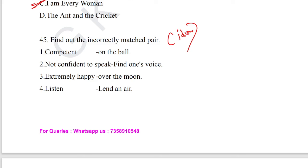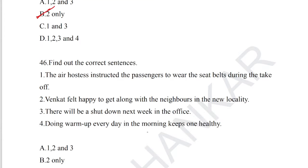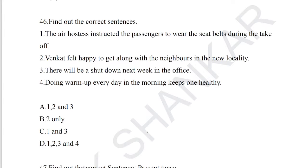Question number 45: find out the incorrectly matched pair — idioms. 'On the ball' means competent; 'find one's voice' means highly confident to speak (not 'not confident'); 'over the moon' means extremely happy. Statement two — 'find one's voice' is incorrectly matched. Option B is the correct answer for question number 45.